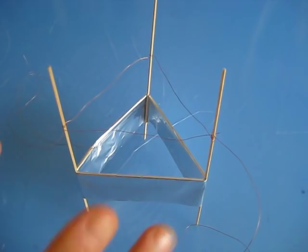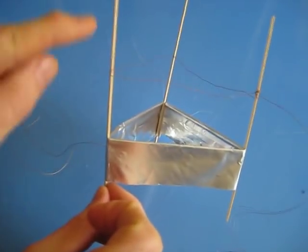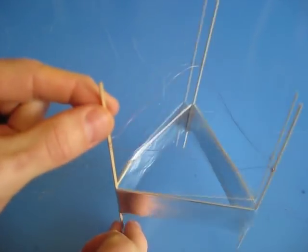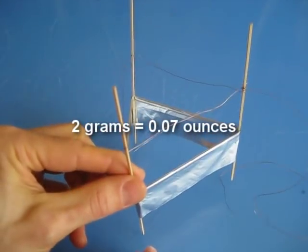You want everything to be as light as possible. So for these wooden supports, I'm using balsa wood. It's 1/16th of an inch. I get it from hobby stores. It comes in 3-foot lengths. It's extremely light. This whole thing only weighs about 2 grams.